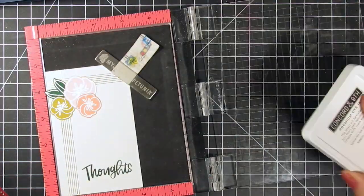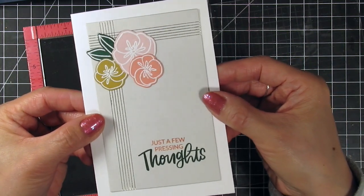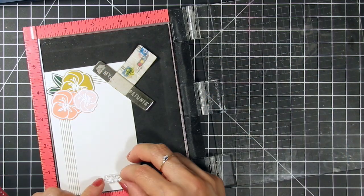For the first card I stamped the scripted word in evergreen since it needed more green and the leaves were furthest away from the main sentiment. Then I stamped the secondary sentiment in grapefruit to highlight one of the flowers.